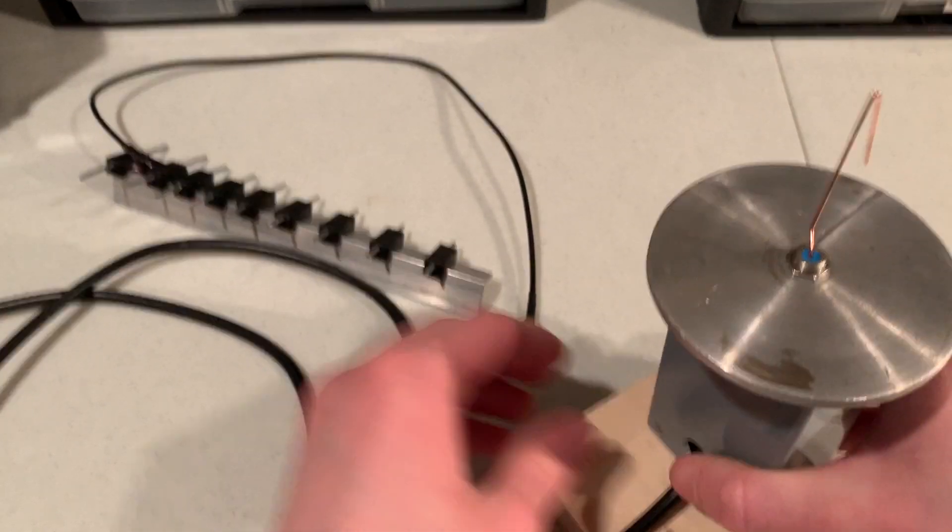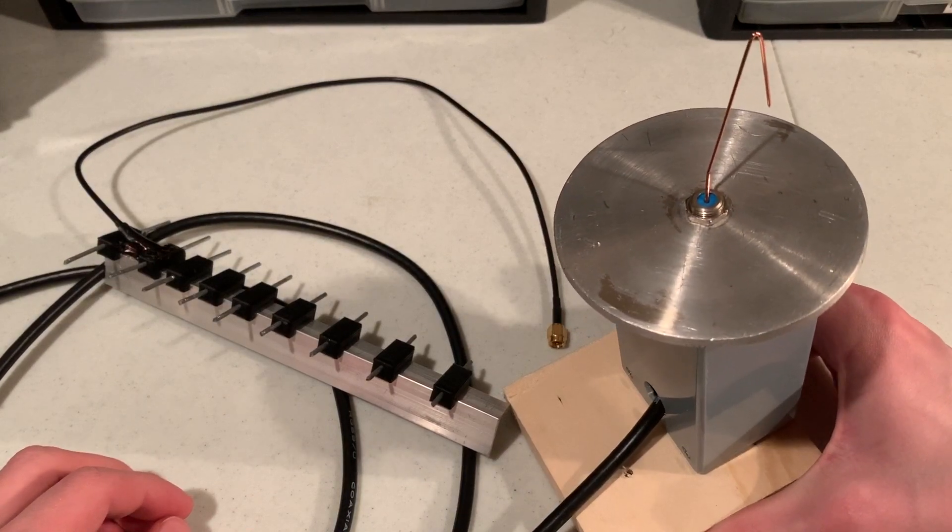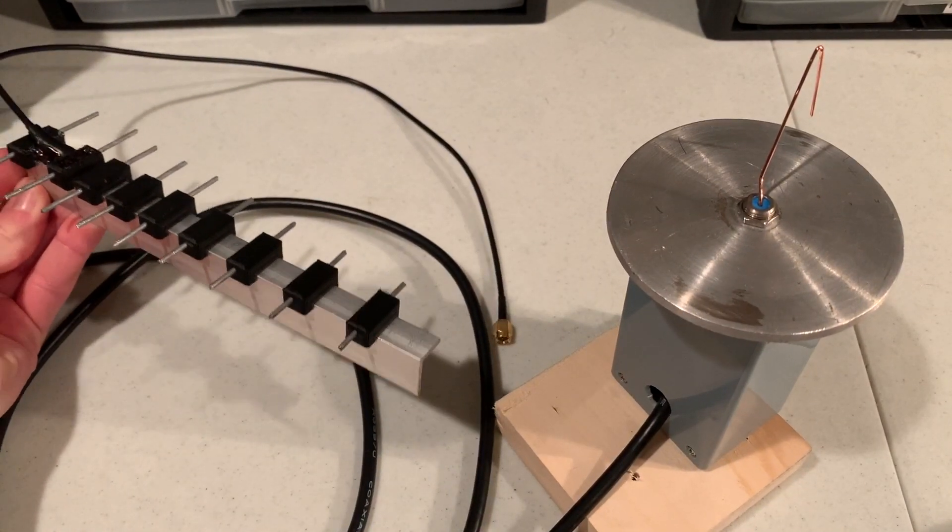I designed the Yagi by hand in about 15 minutes, while the evolved antenna was designed in less than 3 seconds by a program that I wrote. Both of the antennas are optimized for the same frequency, 2.4 GHz.